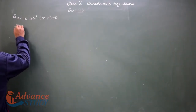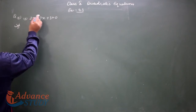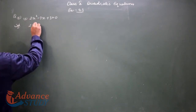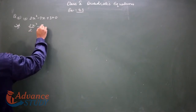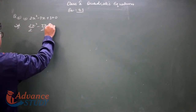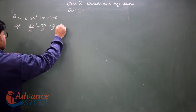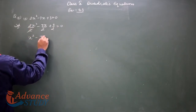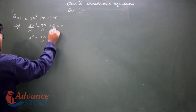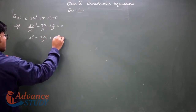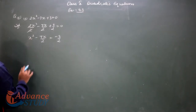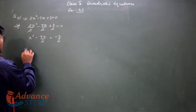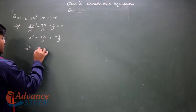Using completing the square method, we can divide the whole equation. For equation one: 2x² - 7x + 3 = 0. Dividing by 2 gives us: x² - 7x/2 + 3/2 = 0, which becomes x² - 7x/2 minus 3/2.